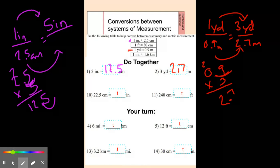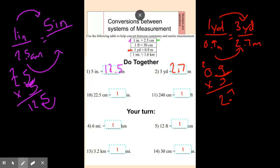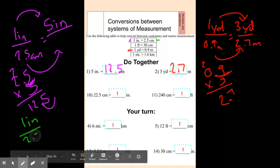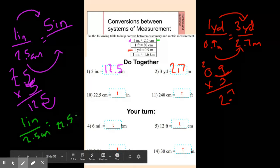Hopefully we're getting the hang of this by now. Now we're going to go centimeters to inches. So again, we're going to use this top one that we used over here. So we know that one inch is 2.5 centimeters. We have 22.5 centimeters. We want to know how many inches.